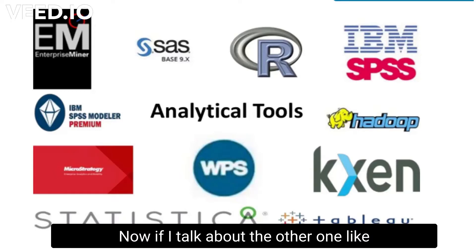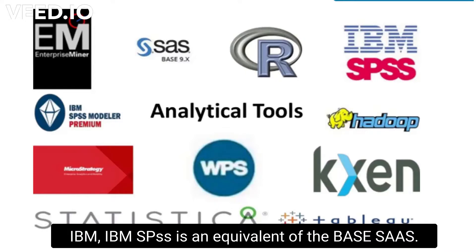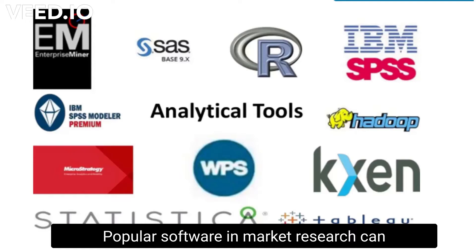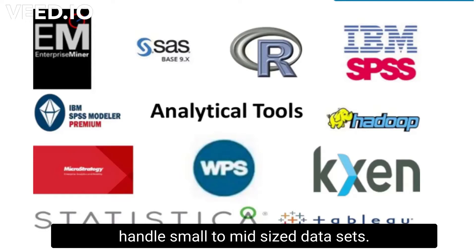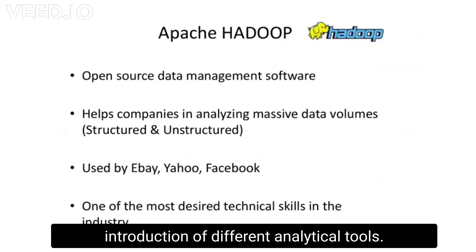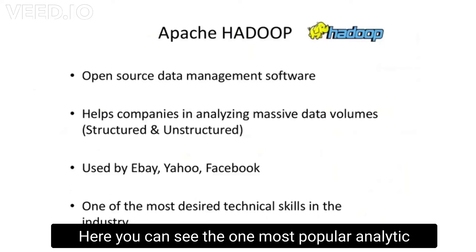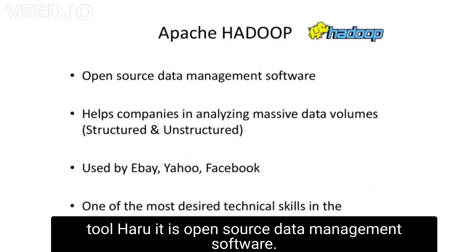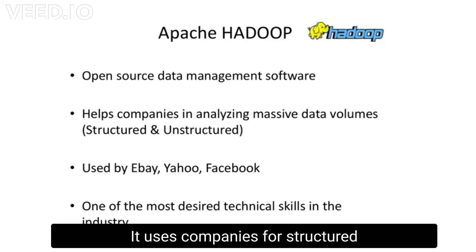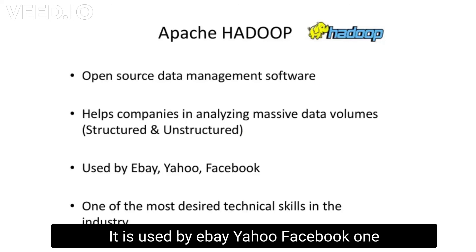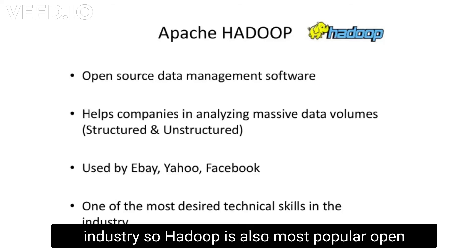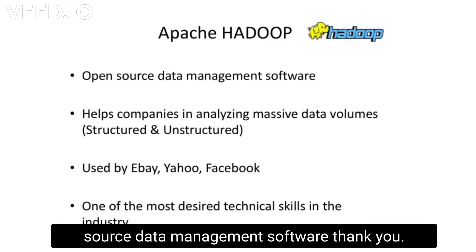IBM SPSS is an equivalent of Base SAS — a popular software in market research that can handle small to mid-sized datasets. Another popular analytic tool is Hadoop, which is open source data management software. It is used by companies for structured and unstructured datasets and is used by eBay, Yahoo, and Facebook. It is one of the most in-demand technical skills in the industry.